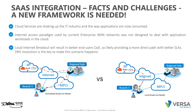Backhauling traffic to a centralized internet exit — typically your data center — just to access the internet is no longer relevant. It's expensive, prone to latency and other impairments, and will ultimately result in user experience degradation. As shown in the diagrams, on the left-hand side, Office 365 traffic requested by the end user is being tromboned through the central hub, resulting in a higher round trip time compared to the more direct access shown on the right-hand side.